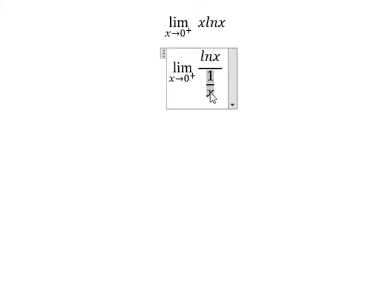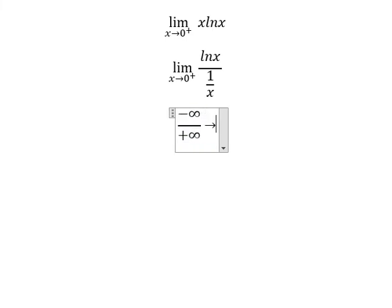1 over number 0 from the right, you will go to positive infinity. So that means we have negative infinity over positive infinity. This one we can use L'Hospital.